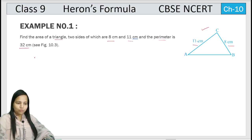So according to Heron's formula, area of triangle is square root of S times S minus A, times S minus B, times S minus C.